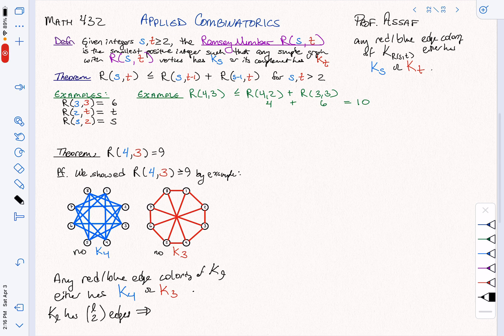So that implies there are 2 choices for each edge, so 2 to the 36 possible colorings. This is why Ramsey problems are hard. This is about 69 billion cases to check. We clearly can't do it.